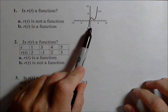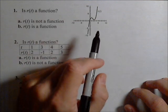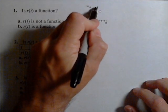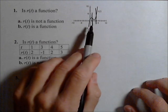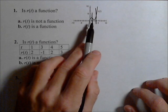So number one, we're looking at this graph, and remember with a graph we want to see if it passes the vertical line test. In other words, will a vertical line hit the graph more than once?